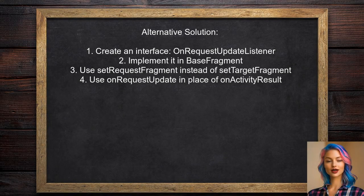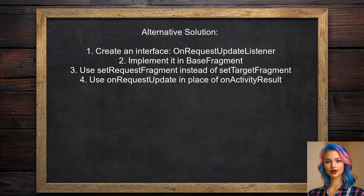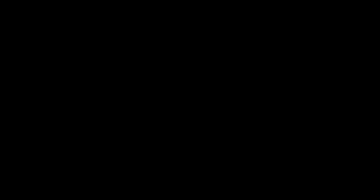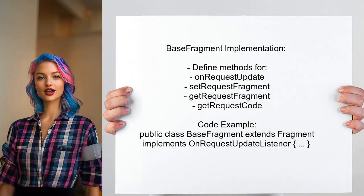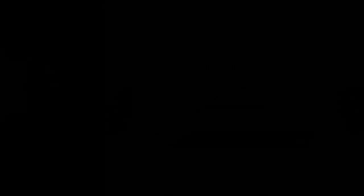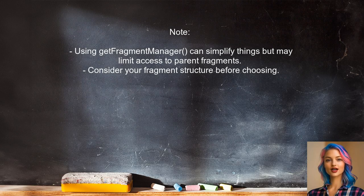Another alternative solution involves creating an interface called OnRequestUpdateListener. This interface helps manage fragment interactions without worrying about which fragment manager is being used. In your base fragment, you define methods to handle request updates and manage the request fragment and request code. This custom solution simplifies fragment management. Additionally, using getFragmentManager instead of getChildFragmentManager can work, but it may affect how you access parent fragments.